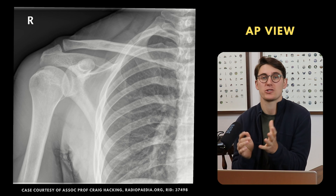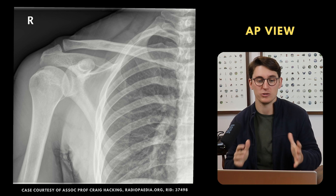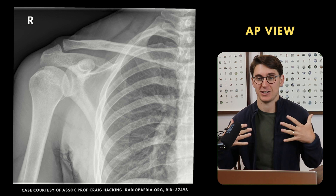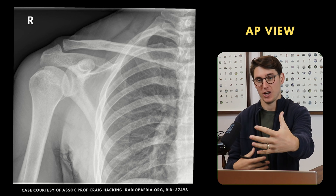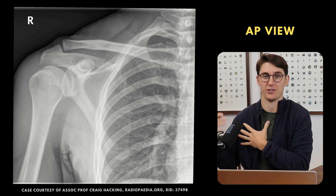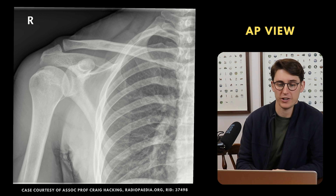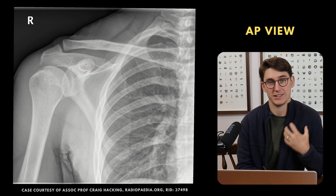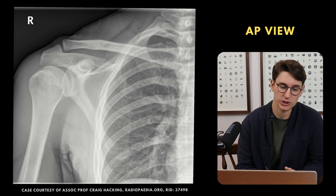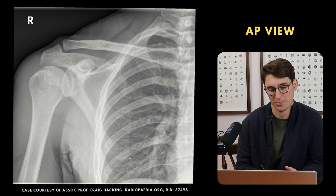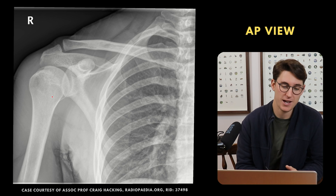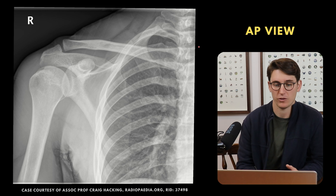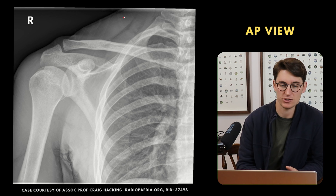We're going to start with our most common view — the AP view, which any department will do for a patient complaining of trauma and pain in the shoulder. The patient sits directly facing the x-ray machine, with x-rays coming from anterior and the plate behind posteriorly. We have our clavicle coming across towards our acromion, anteriorly our coracoid process, our shallow glenoid fossa, behind our scapula, medial border of the scapula, our humerus with our humeral head sitting within the glenoid fossa, our ribs, chest cavity, spine, and soft tissues.